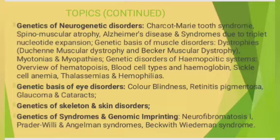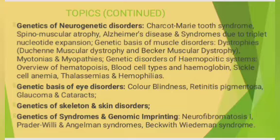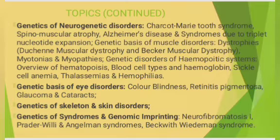Genetic disorders of the hematopoietic system are covered, including an overview of hematopoiesis, blood cell types and hemoglobin, and diseases such as sickle cell anemia, thalassemias, and hemophilias.